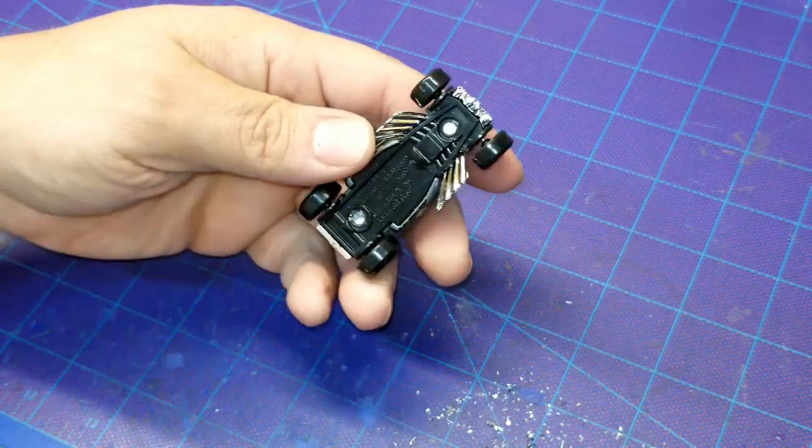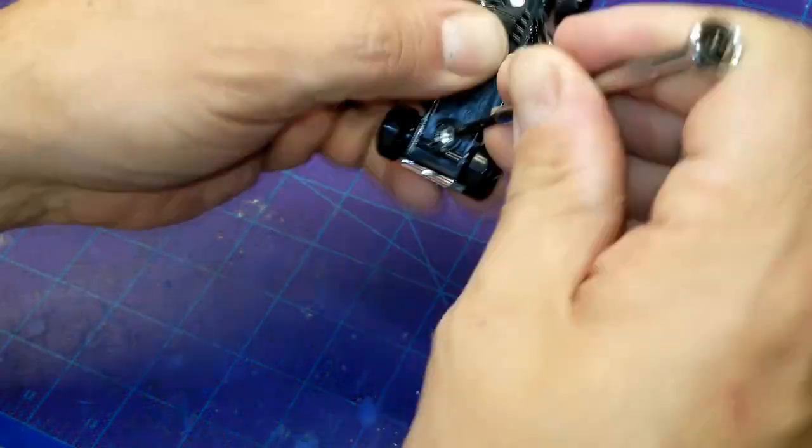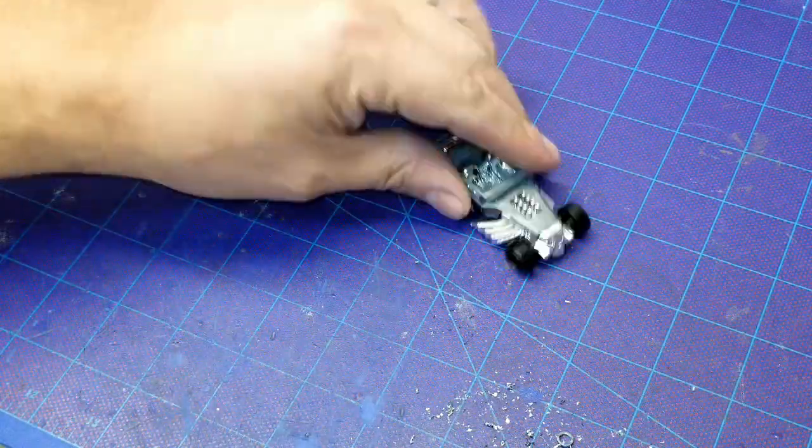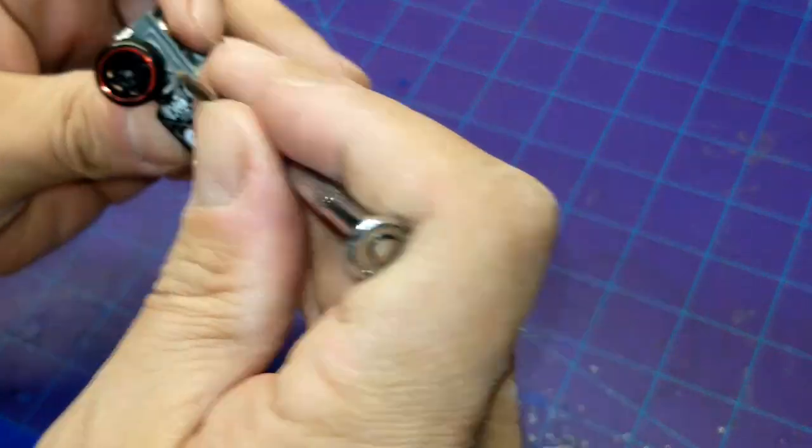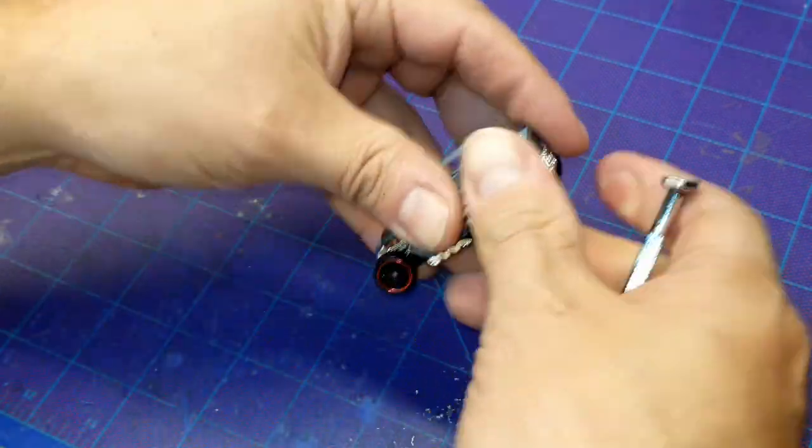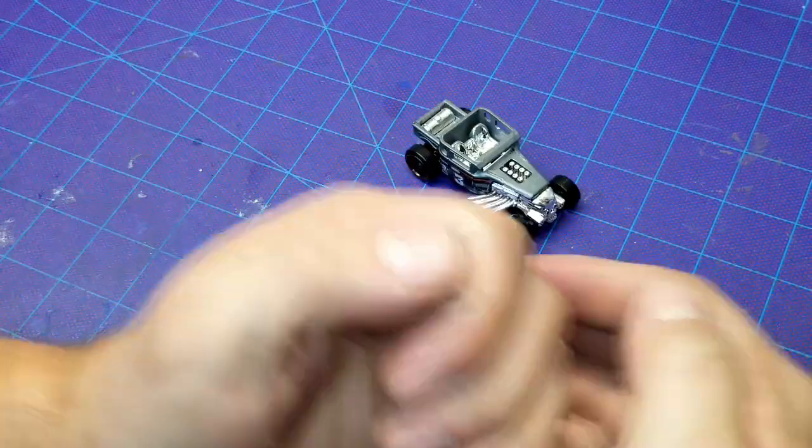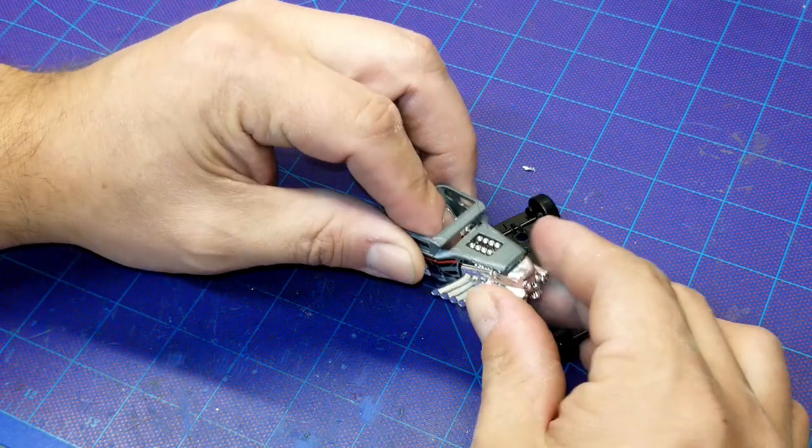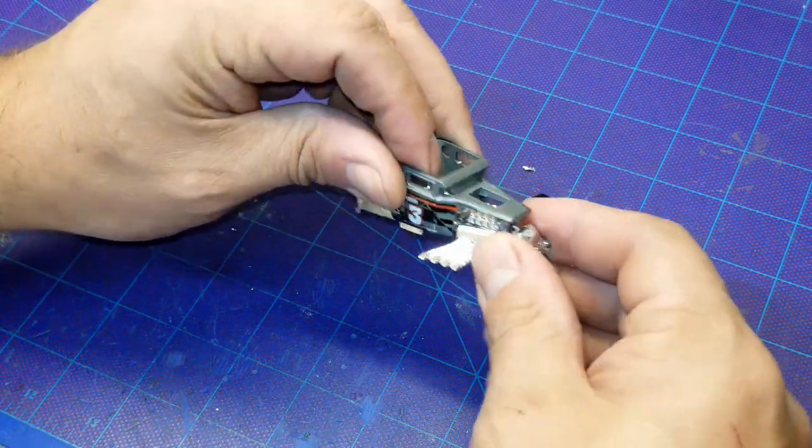We'll see where it takes us after we get this thing apart and kind of get things rolling. Get our post drilled out and get those little rings popped off. Get in here with the screwdriver, pop that base off.